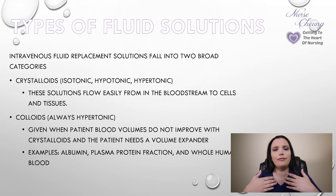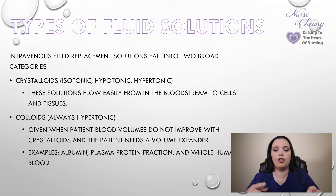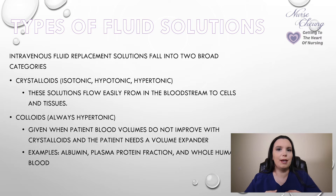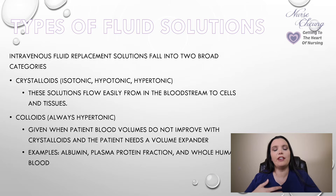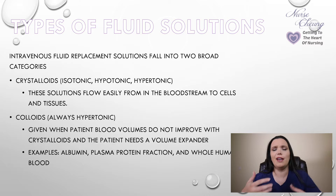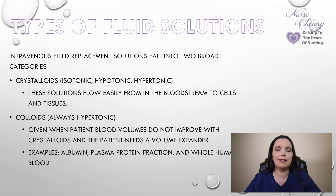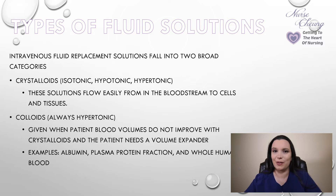We've also got another category: colloids. Colloids are usually always hypertonic — that's your albumin, your plasma protein fraction, as well as your whole human blood products. We give these solutions when patients are not responding to crystalloids and need a volume expander within their bloodstream. But we're not going to be discussing colloids today. Today we're primarily focusing on our crystalloids.